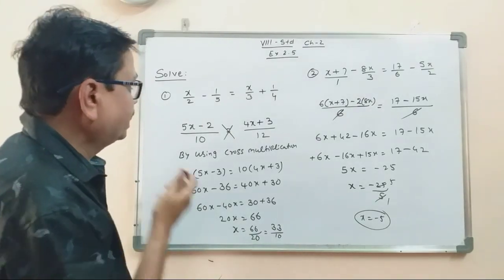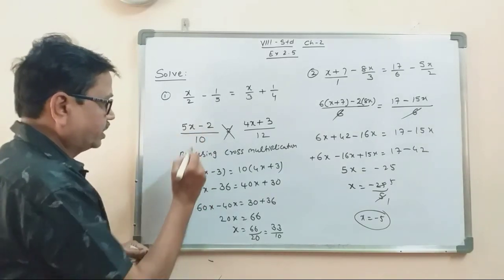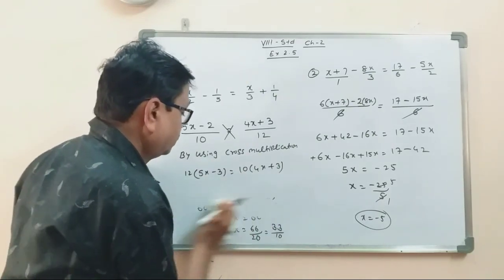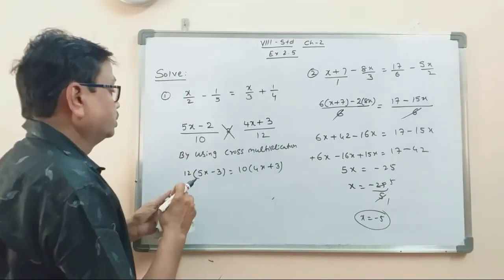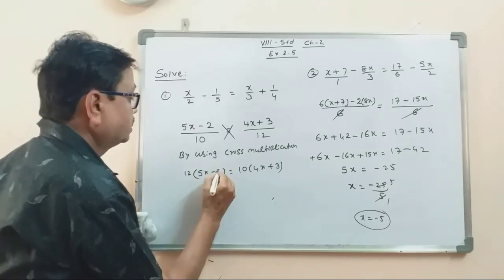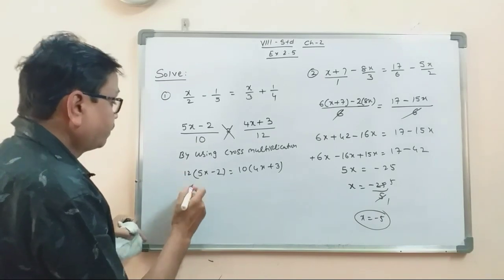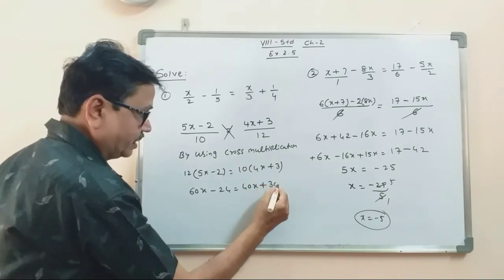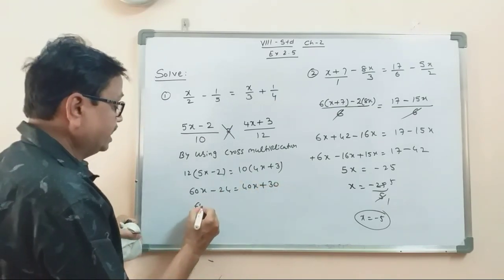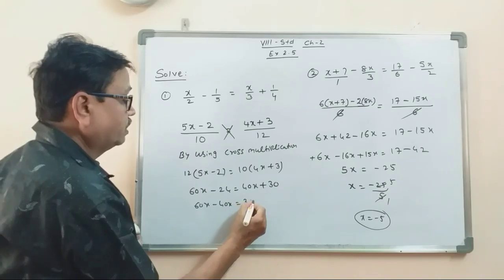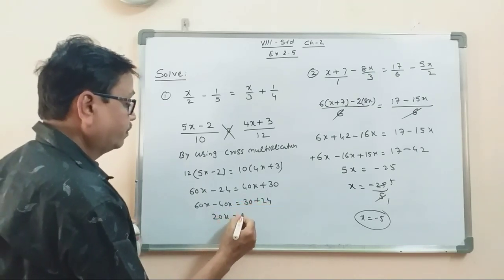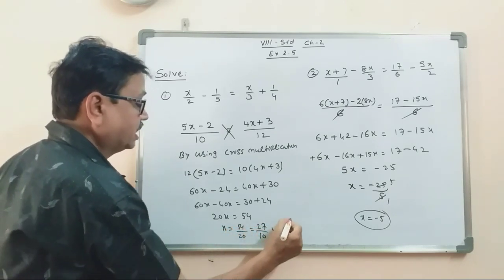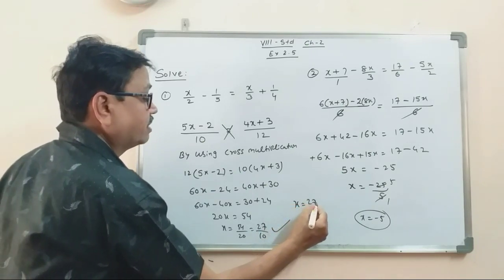We are using a sum to 5x minus 2. So, what is the x value? 54 by 20 — this is the answer. So, x value is 27 by 10.